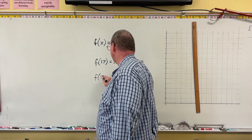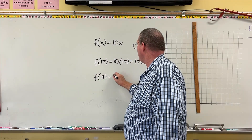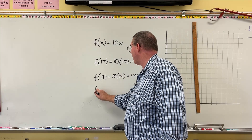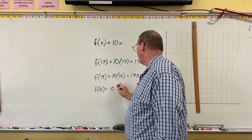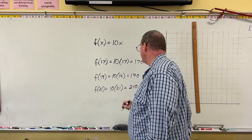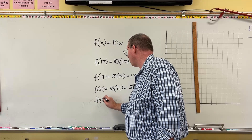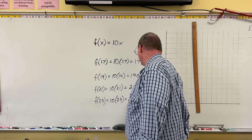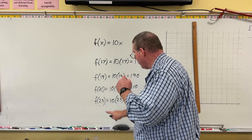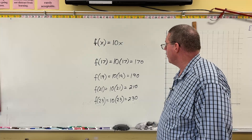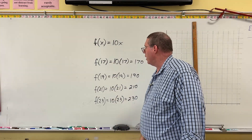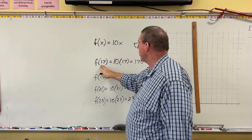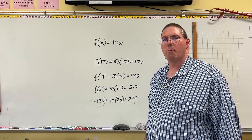If we want F(19) — if they work 19 hours — that would be 10 × 19 = $190. What about F(21)? That's 10 × 21 = $210. And F(23)? If they work 23 hours, that's 10 × 23 = $230. So the input is 23 hours and the output is $230. This is how we use function notation to calculate outputs from numerical inputs.